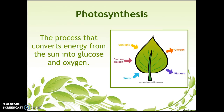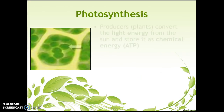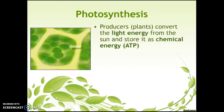So what is photosynthesis? Photosynthesis is the process that converts energy from the Sun into glucose and oxygen. This is a very important process — without this process, the majority of life on Earth would not exist. Photosynthesis occurs in producers. Producers are just a fancy way of saying plants, and producers are responsible for converting the light energy from the Sun and storing it as chemical energy.